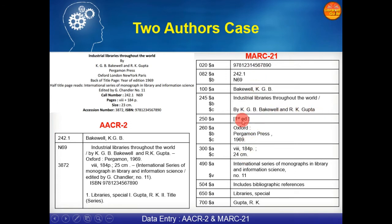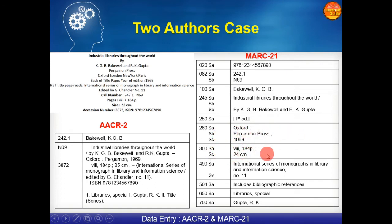So let me explain the MARC fields for two authors: ISBN number in 020; call number; 100 for the first author detail; 245 for the title detail with statement of responsibility; 250 $A the edition detail; 260 the publisher detail; 300 physical description; 490 series description; 500 general note; 650 the subject heading; and 700 the added entry of the second author.